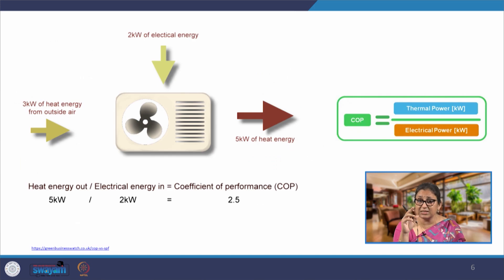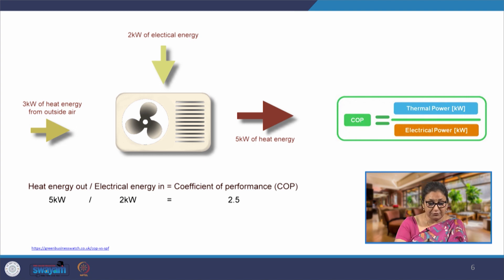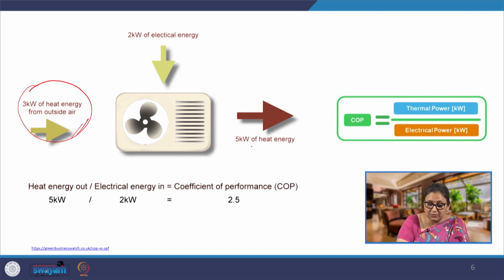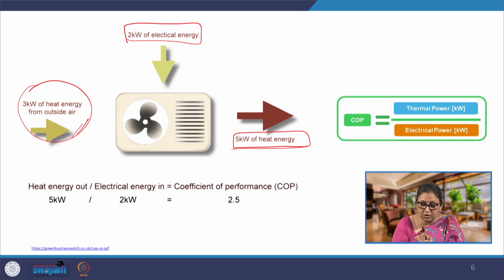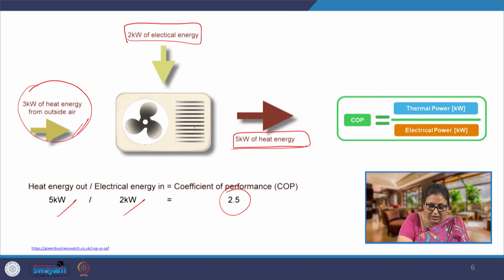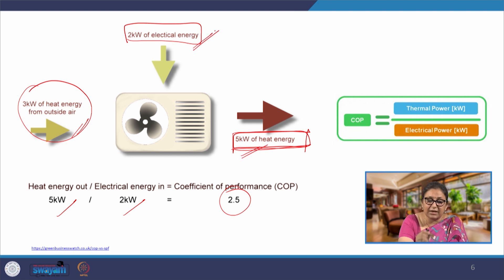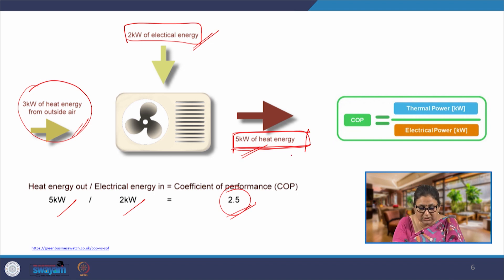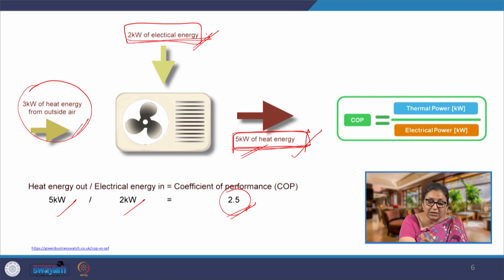To illustrate clearly: if we are removing 5 kW of heat energy overall by supplying approximately 2 kW of electrical energy (with 3 kW contributed from the outside air), the COP equals 5 kW divided by 2 kW, which is COP 2.5. This total work done in terms of energy extraction is 5 kW and the energy supplied is 2 kW. If any two of the three values are given, we can calculate the third — including how much energy will be consumed given the COP and the total work required.